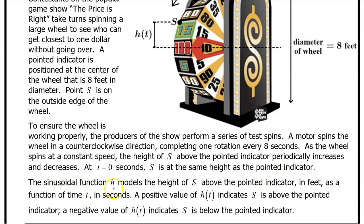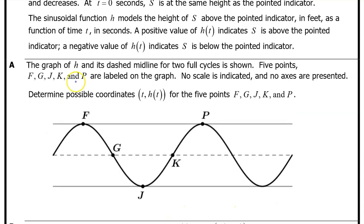The sinusoidal function H models the height of S above the pointed indicator in feet as a function of time in seconds. A positive value of H indicates S above the pointed indicator. A negative value of H indicates S below the pointed indicator. Part A. The graph of H and its dashed midline for two full cycles is shown. Five points F, G, J, K, and P are labeled on the graph. No scale is indicated and no axes are presented. Determine possible coordinates for the five points F, G, J, K, and P.